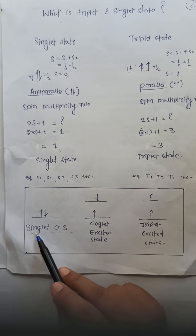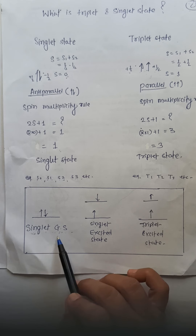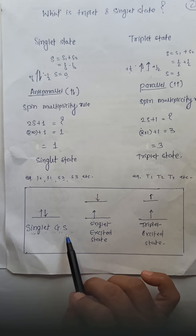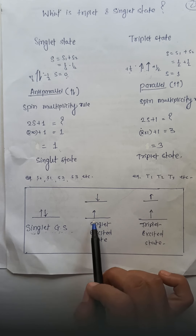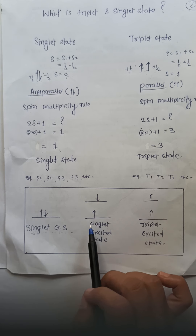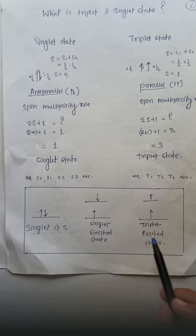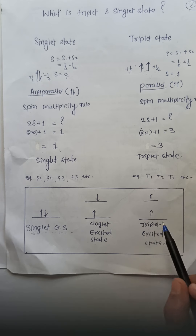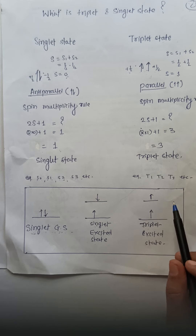In the singlet ground state, when it gets converted into the singlet excited state, the direction of the electrons is opposite to each other. But in the triplet state, the direction of the electrons is the same.